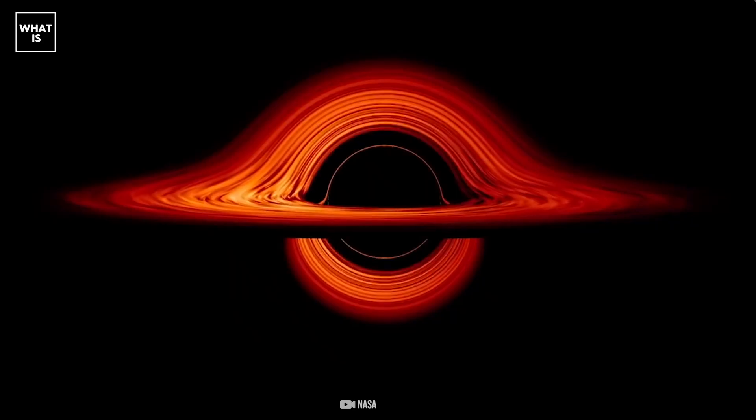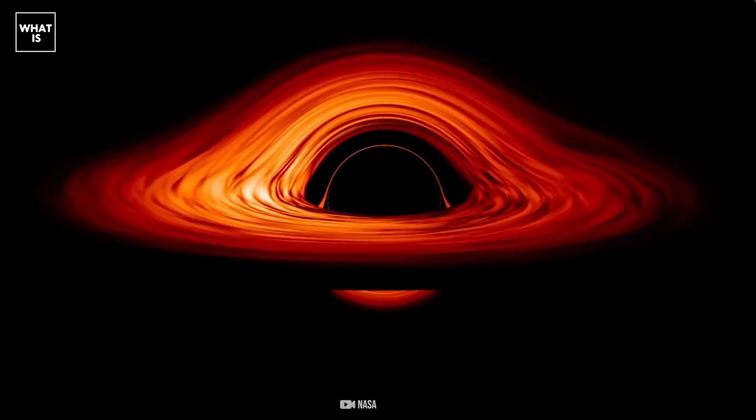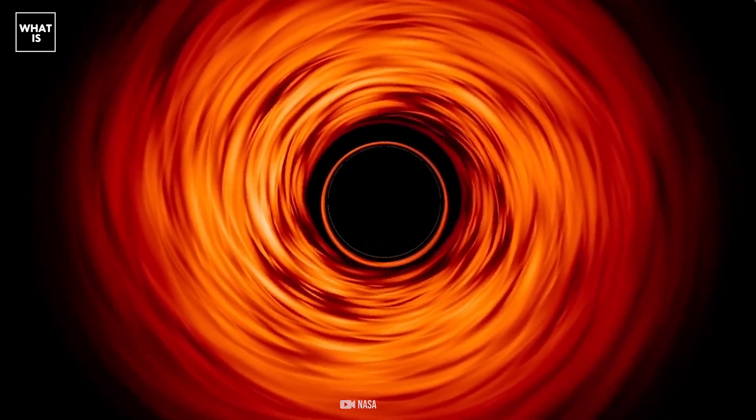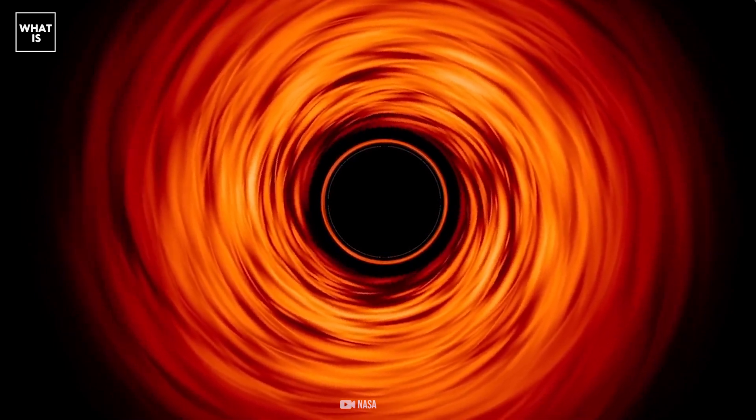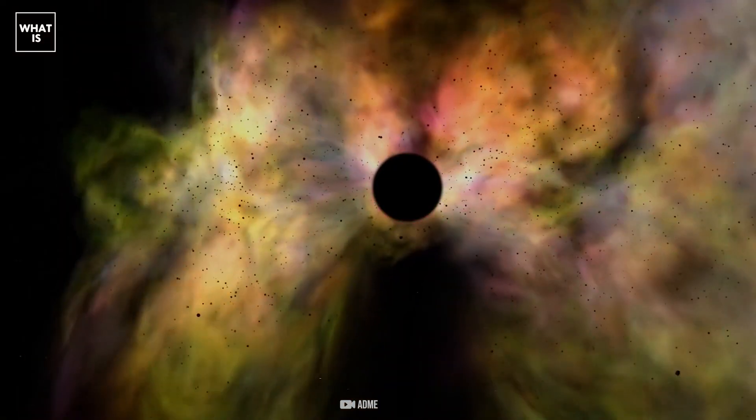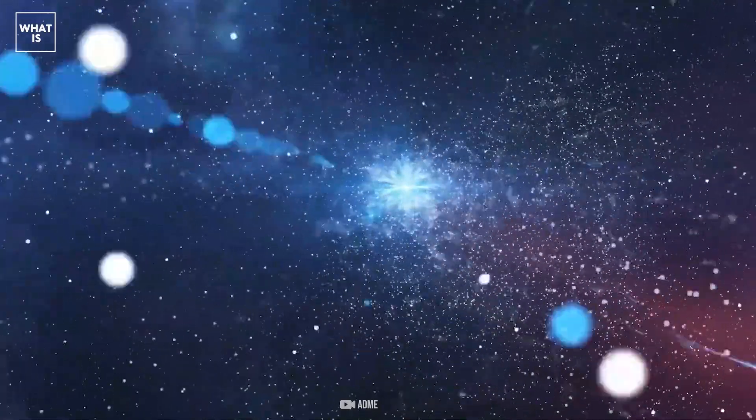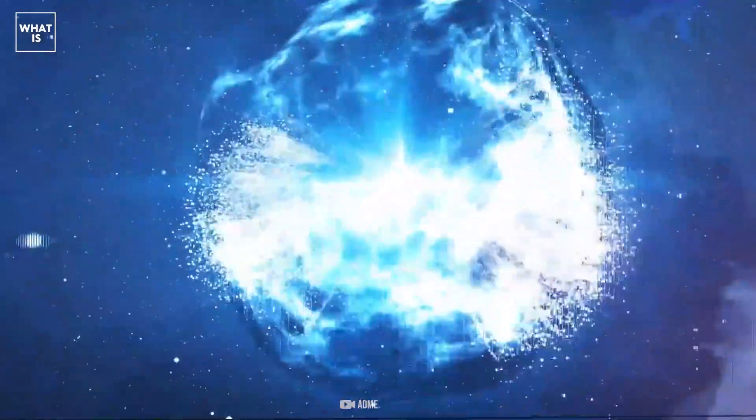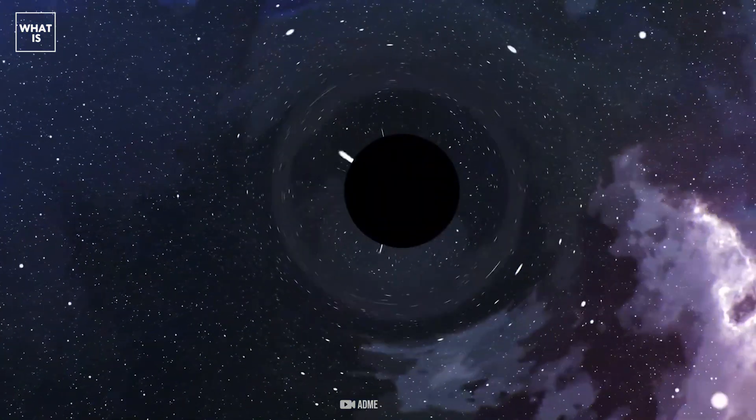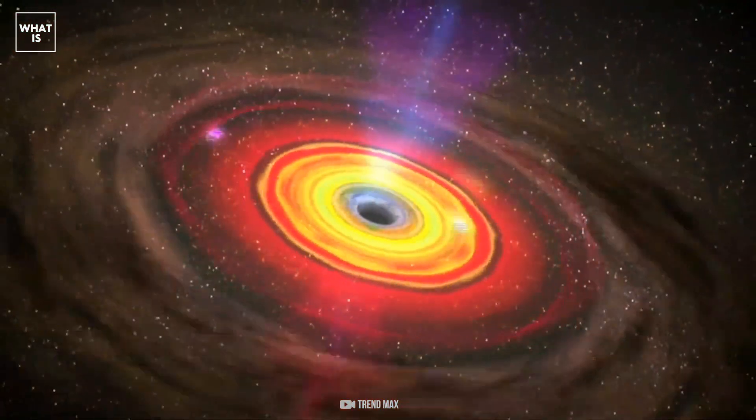Under certain conditions, a wormhole can connect two points in time instead of two points in space. Thus, an object swallowed by a black hole could pass through the wormhole and be erupted by the white hole in another region of time or space. However, the concept has numerous drawbacks. For example, an object falling into a black hole would not be able to withstand its enormous gravitational pull, and since the wormhole is incredibly unstable, it will instantly collapse on itself.